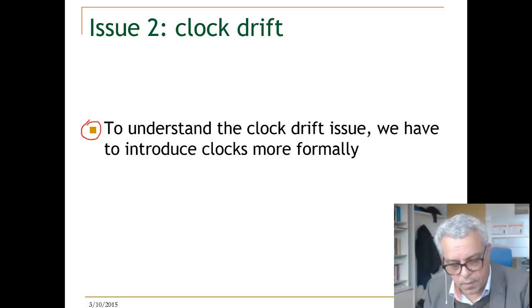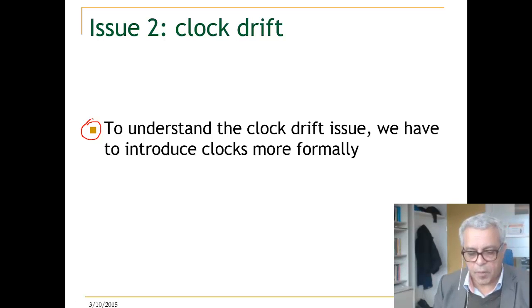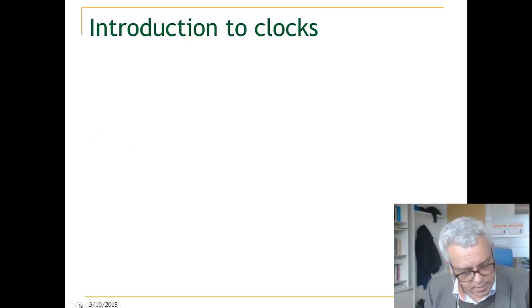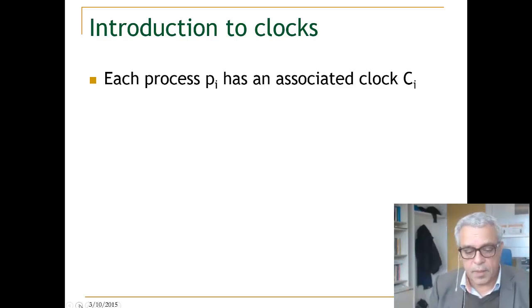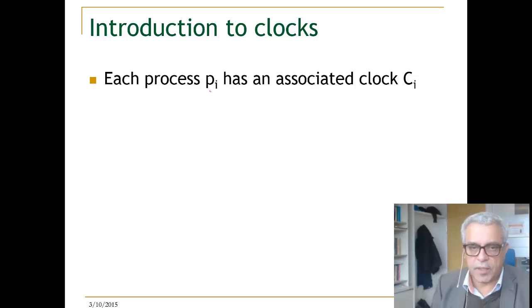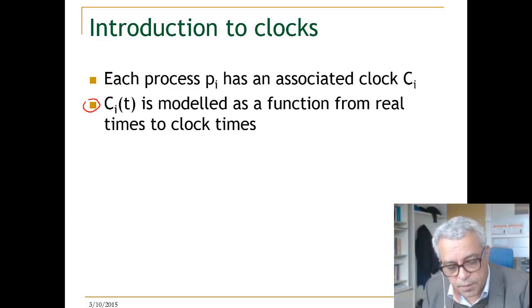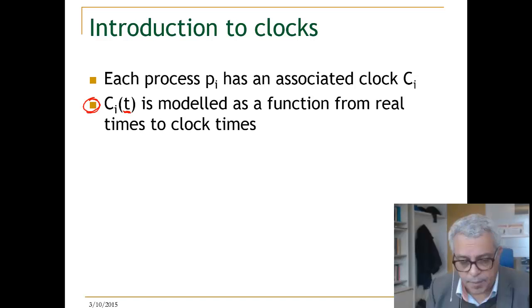Let's have an introduction to clocks here. Each process Pi has an associated clock Ci. So this is a local clock for the process Pi. The clock is modeled as a function from real time to clock times. T denotes the notion of real time and Ci will be a function that tells you about the local clock in real time.